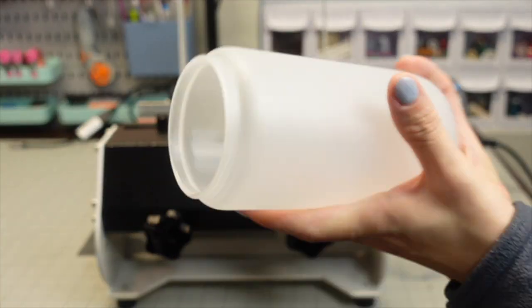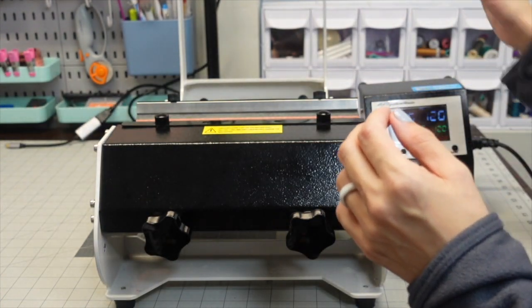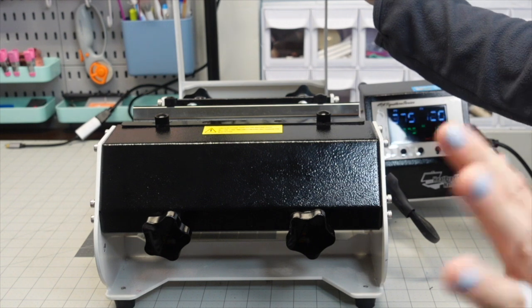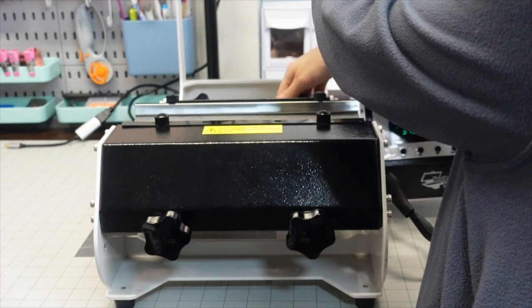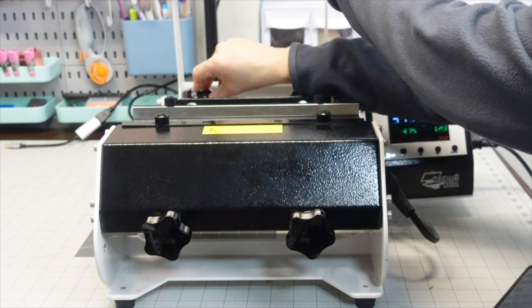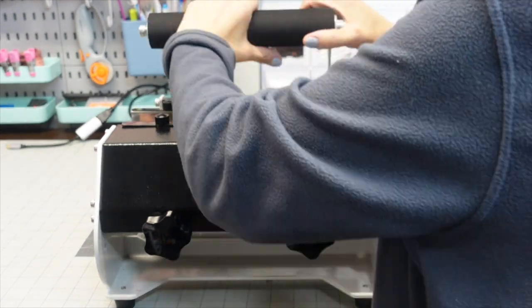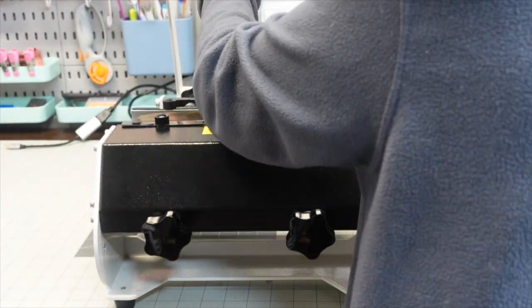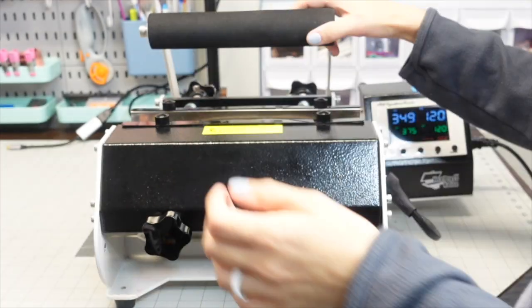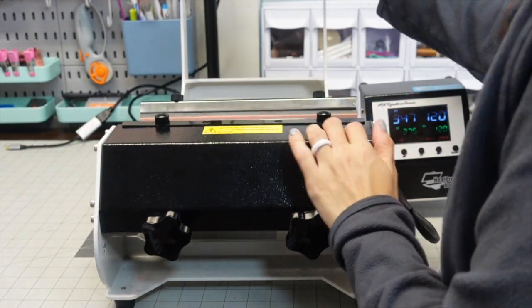We're going to start off by taking our tumbler blank and we're going to put it in our mug press to check for pressure. This is glass so you don't want to be putting too much pressure or you're going to crack it. You want to make sure that you cannot move your tumbler in there but it's not too tight where you're going to crack the glass.